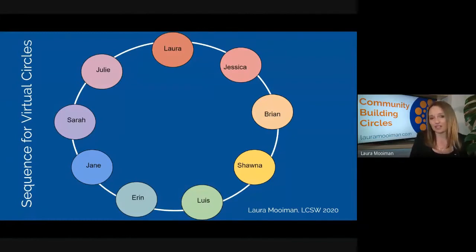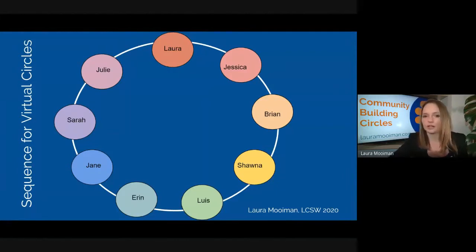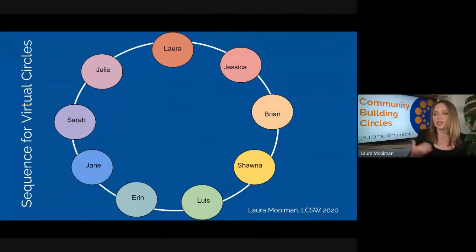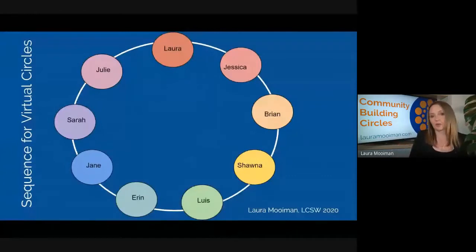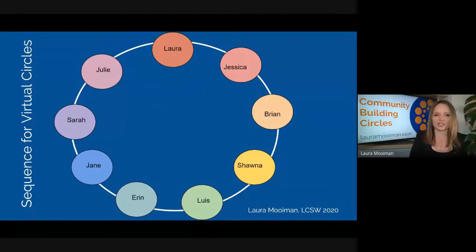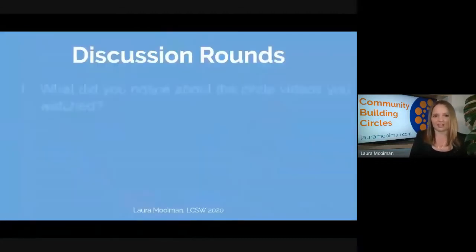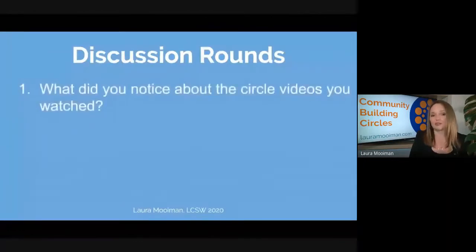Since we don't have that seating chart here, what we're going to do — and you could do this too — is use the participant list on the side of your screen in Google Meet or Zoom. That's how we're going to go. We're going to go alphabetical by first name. The first question in our discussion round is: what did you notice about the circle video that you watched?